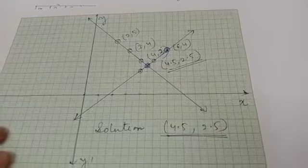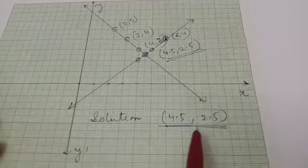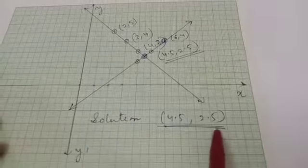So when we solve the two equations x plus y equal to 7 and x minus y equal to 2 graphically, the solution is x equal to 4.5 and y equal to 2.5. In this way you can solve other questions given in your book. I hope you have understood. In my next video I will take more complex questions for you. Stay safe and stay at home — bye bye.